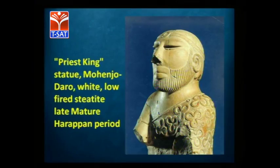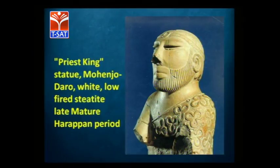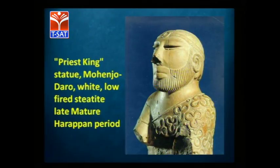Moving on, there is another sculpture found from Indus Valley made of a different material — low-fired steatite. So you can already see two different materials used in Indus Valley. This is from the mature period and it is called the Priest King.